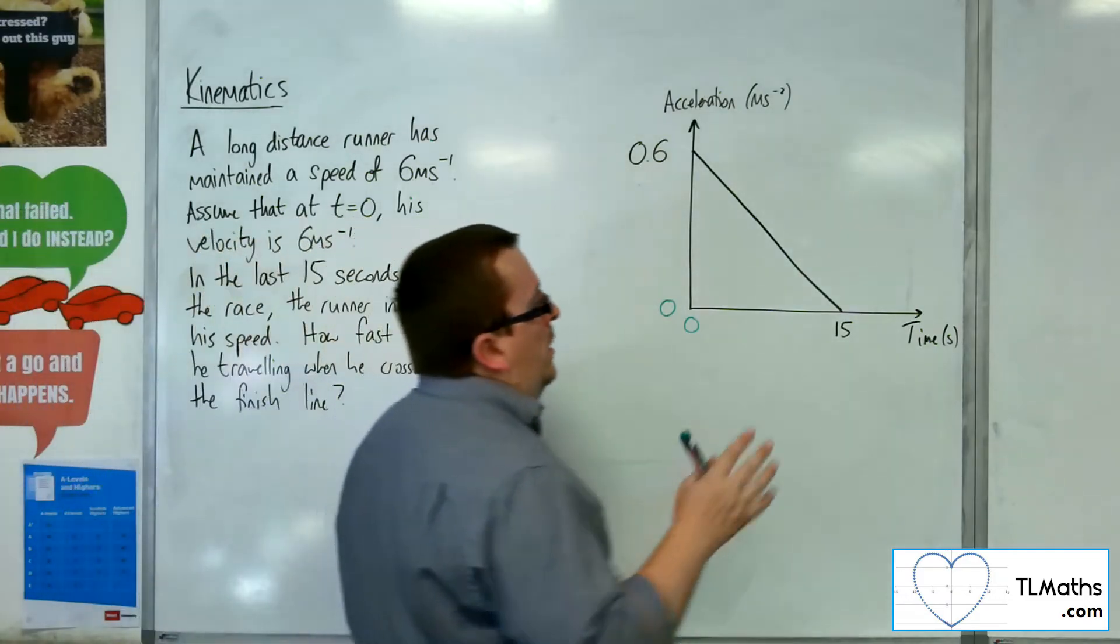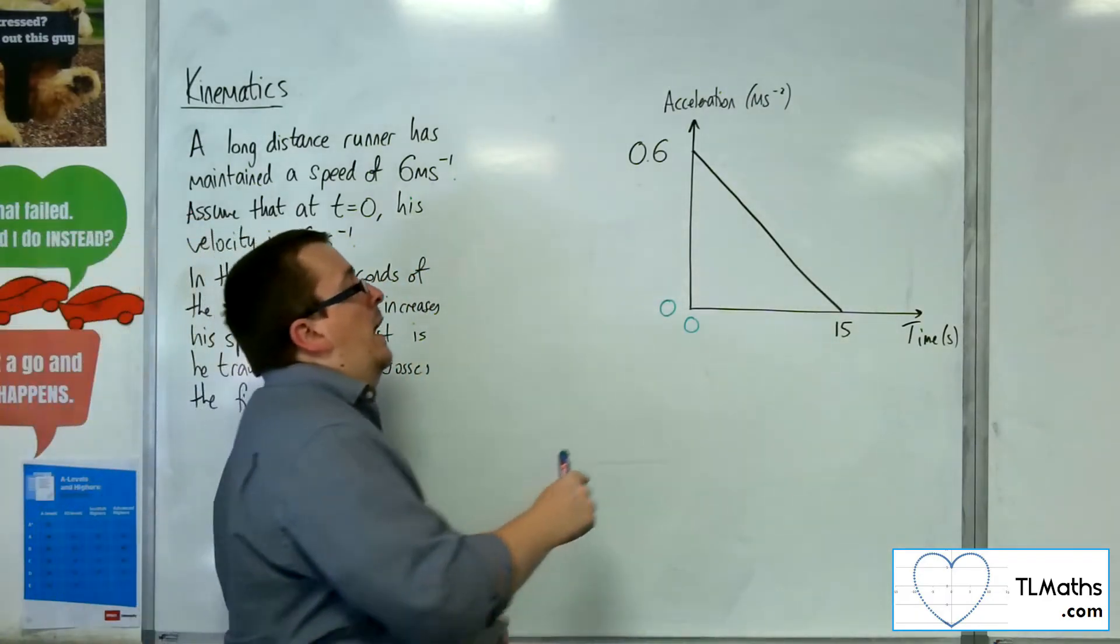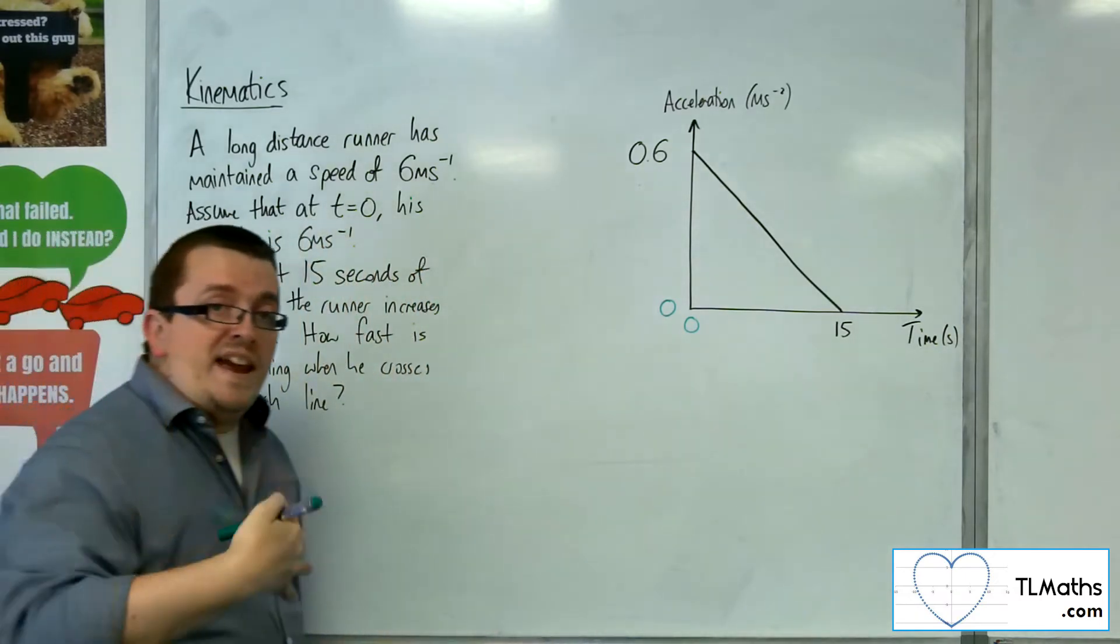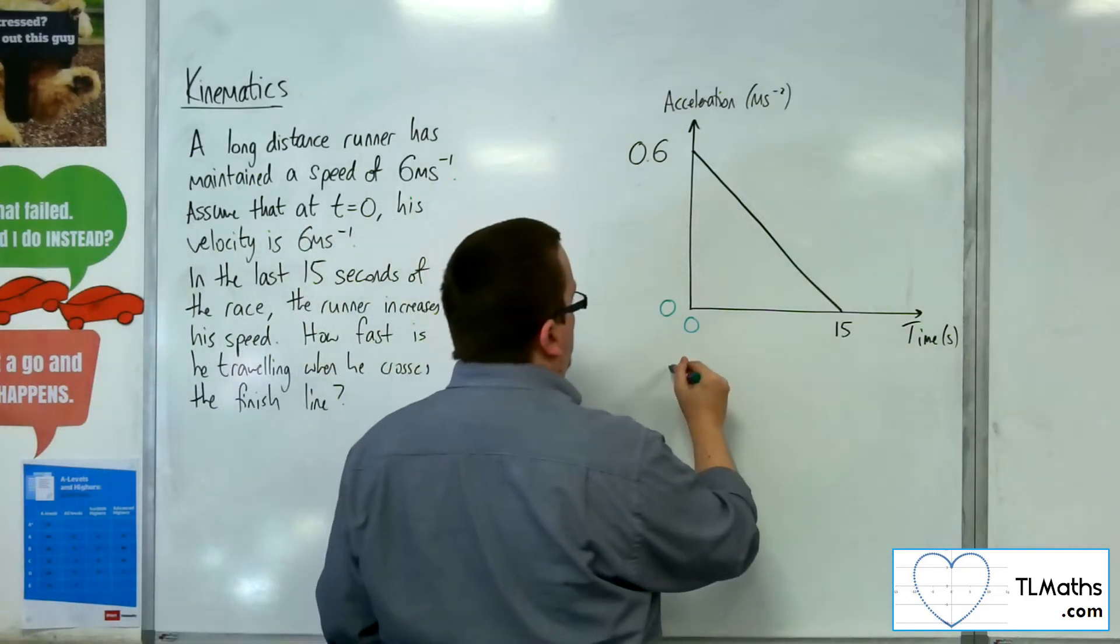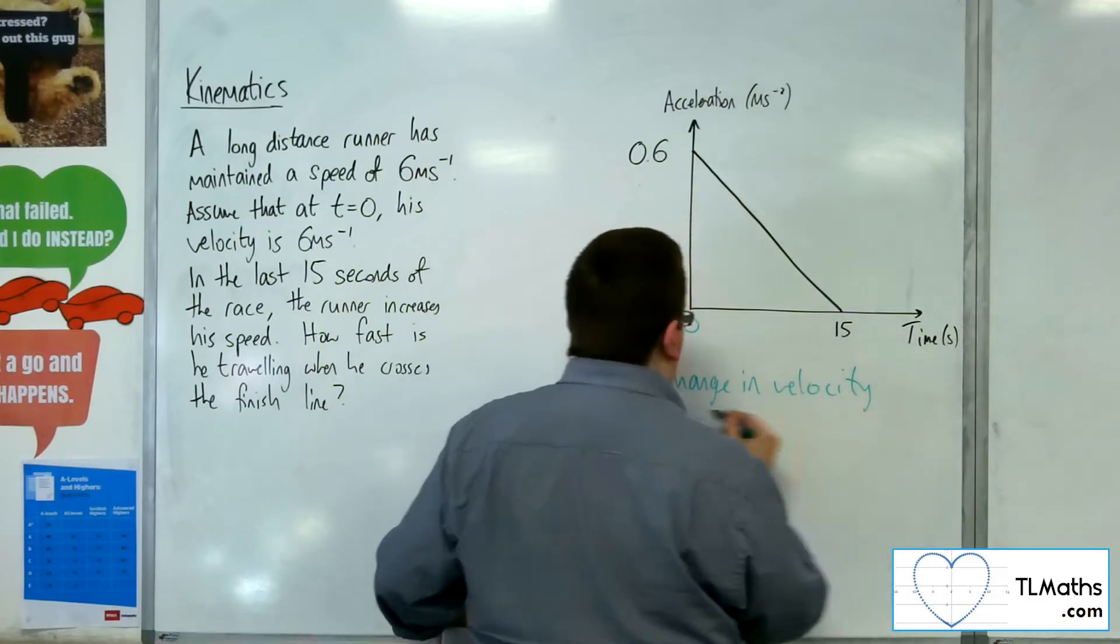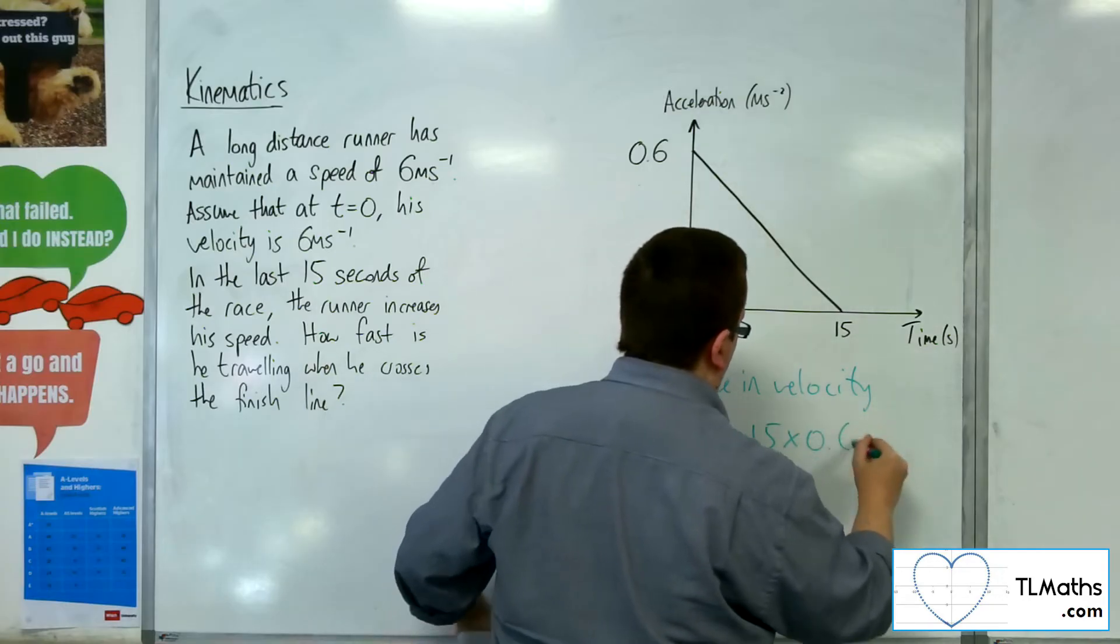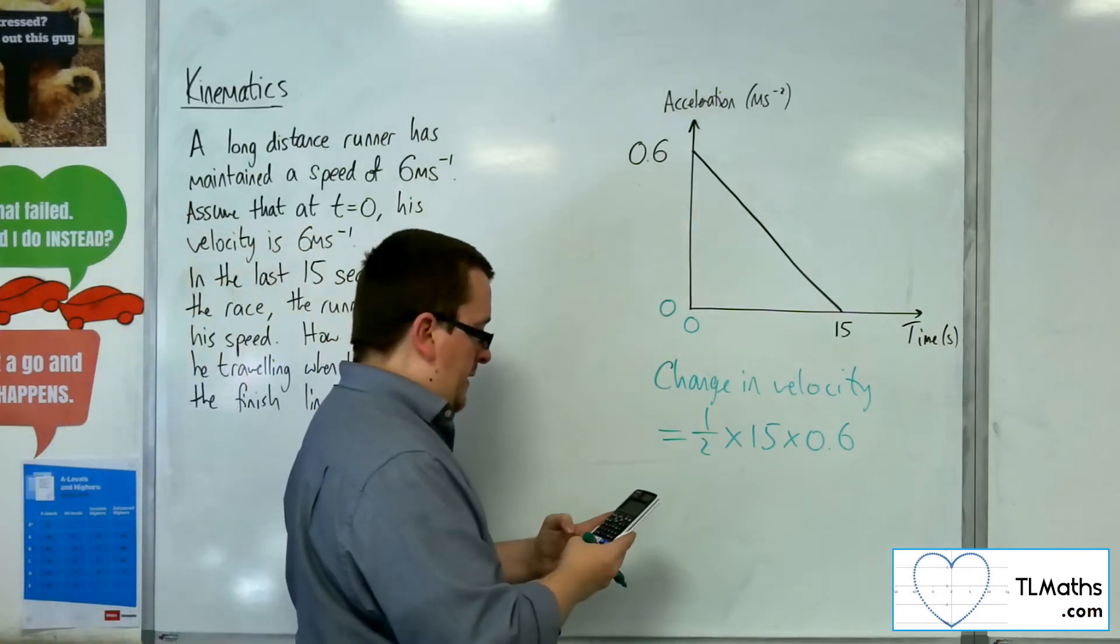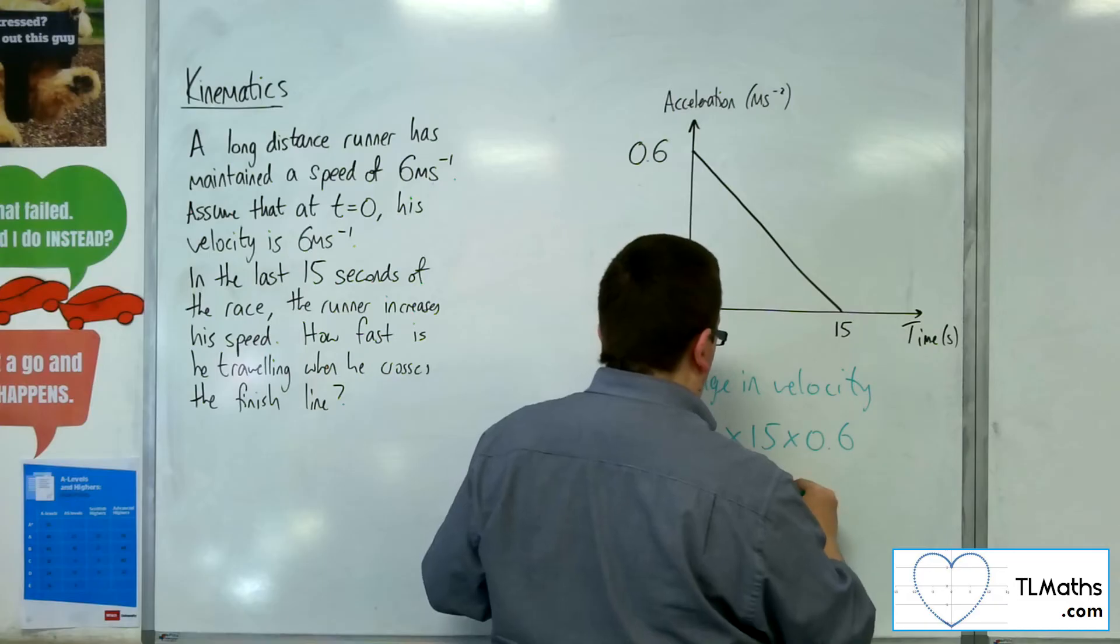So what is his final speed? Now, the area of this triangle will tell you the net change in the velocity. So we can work out the change in velocity by working out the area of this triangle. So that's 1 half times the base times the height. So we've got 0.5 times 15 times 0.6, which gives us 4.5 metres per second.